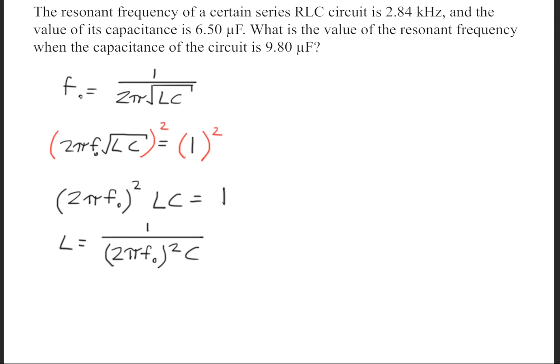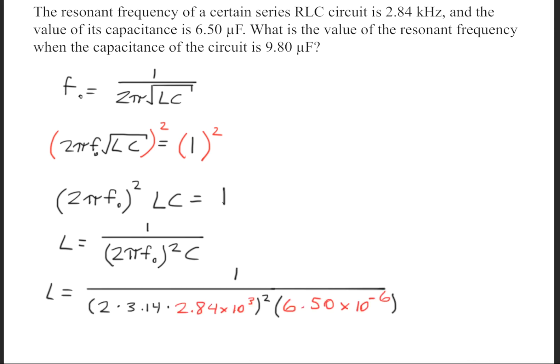We'll divide the other terms so that we get L isolated, and we'll get that the inductance is equal to 1 over 2 pi times the resonant frequency squared times the capacitance. When we plug in the numbers, we'll get that the inductance is about 4.84 times 10 to the minus 4th henries.